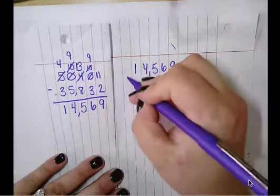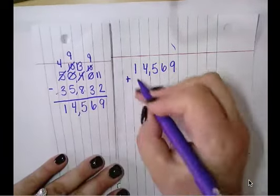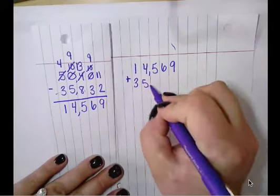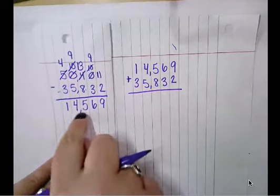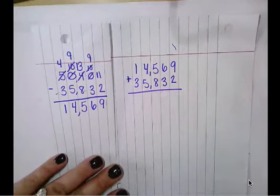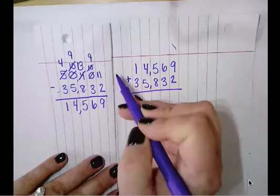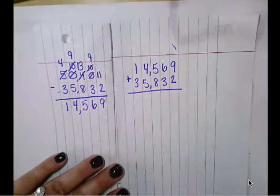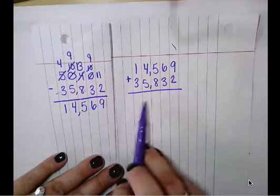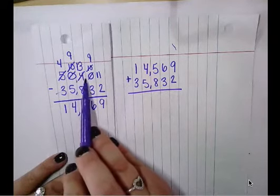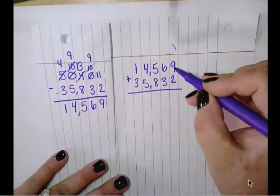So I'm going to do the opposite of subtract. I'm going to add this number right here, 35,832. And remember, this is how I'm checking to make sure this answer is correct. I'm going to do the opposite of subtract, which is add. I'm going to add these bottom two numbers together. If my answer right here gives me 50,401, I know that I solved it correctly. Here we go.